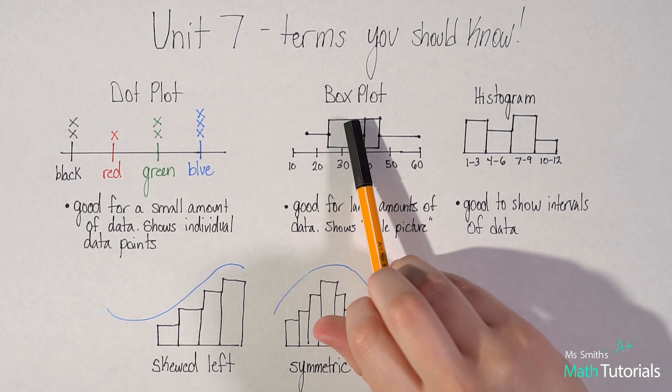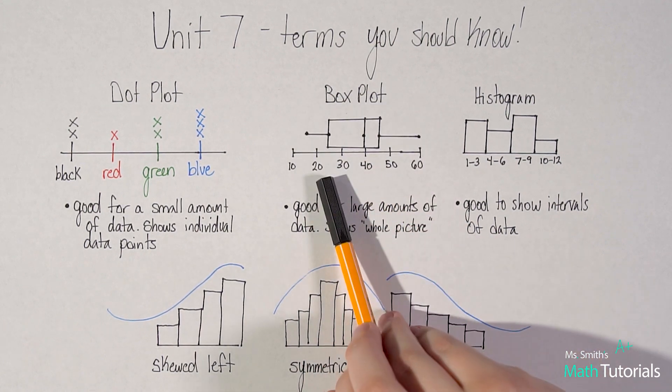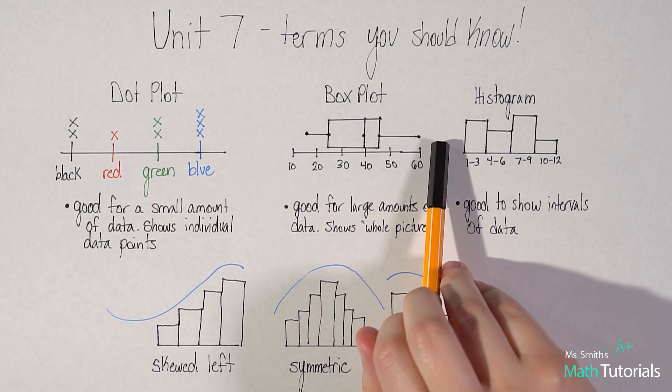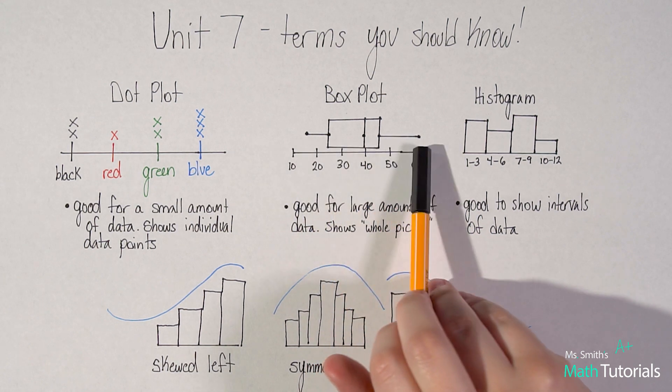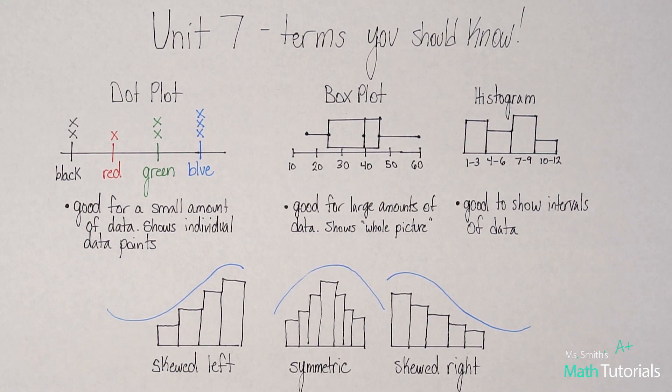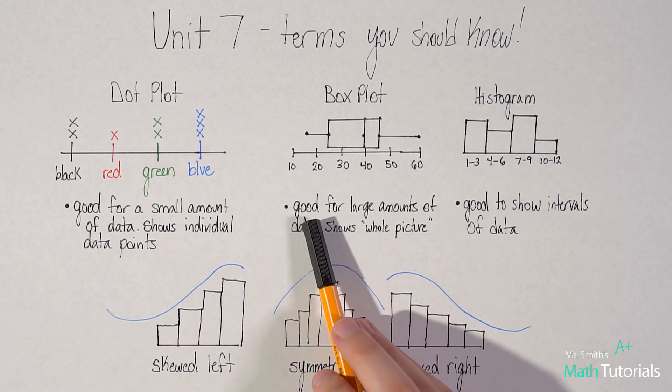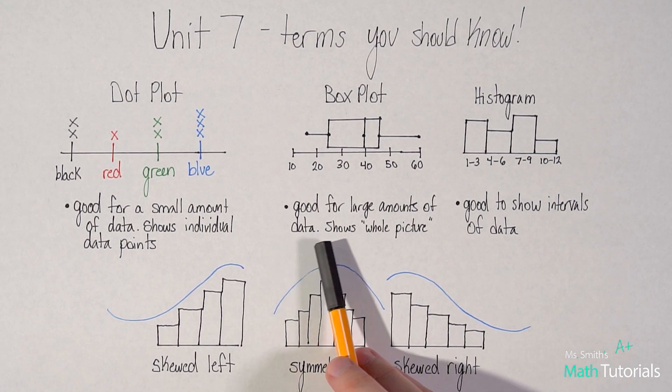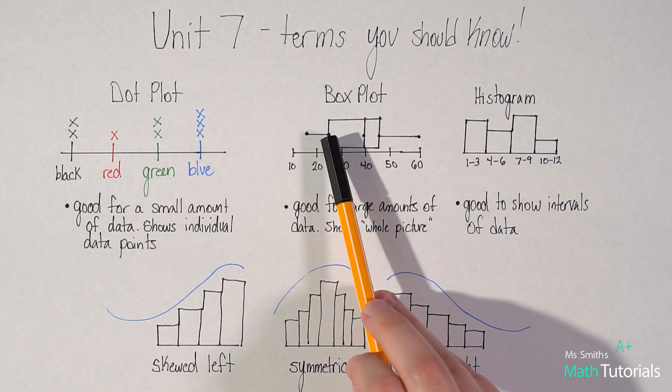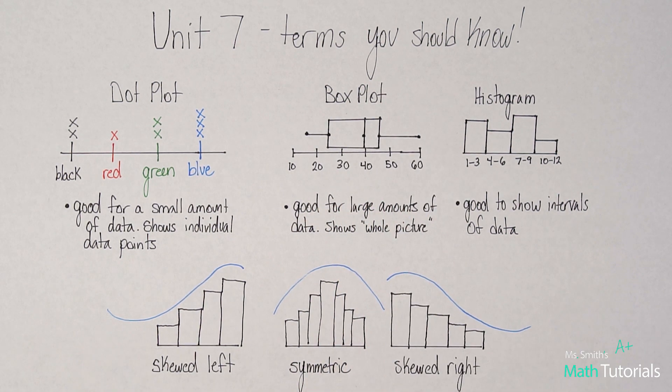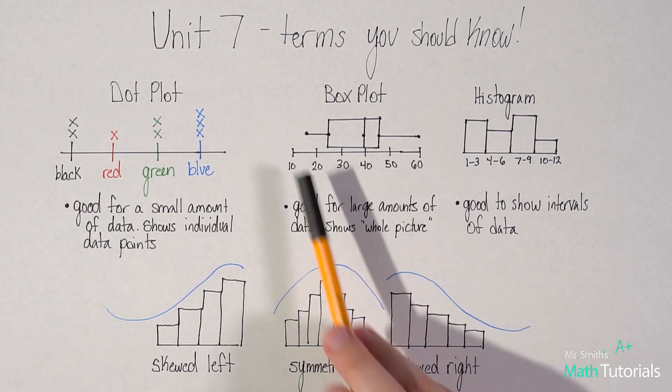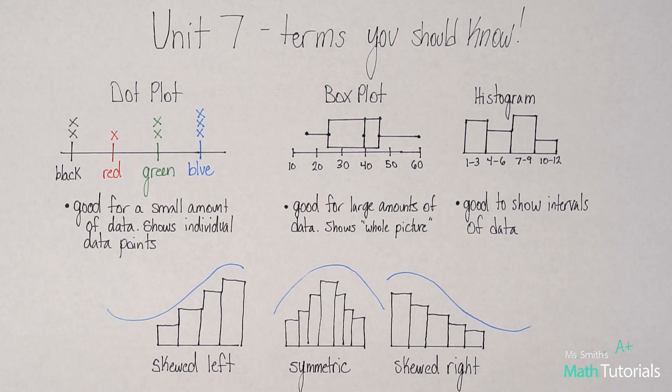We also have box plots, and I'm not going to talk too much about this because my next couple videos are going to be all about box plots. This is also called a box and whiskers, so you might be familiar with that name. But just for information at this point, box plots are good for large amounts of data. So it doesn't show individual data points. These points that we're showing you are not necessarily individual data points, they might be or they might not be. But they're good for showing the whole picture. So if you've got a ton of data that you want to show in a visual, a box plot is a good option. Again, we're going to talk a lot more about those.